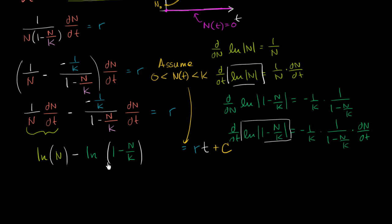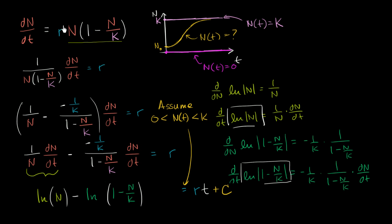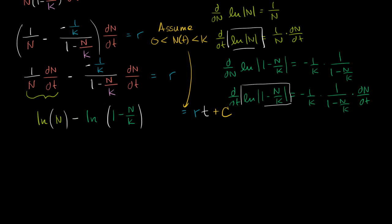So we left off in part one getting pretty close to finding our n(t) that satisfies the logistic differential equation, where its initial condition is between zero and k, and now we just have to do some algebra to finish things up. So we left with this — for our n(t), this must be true.